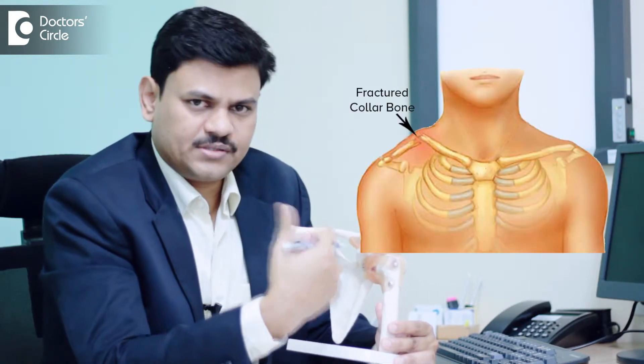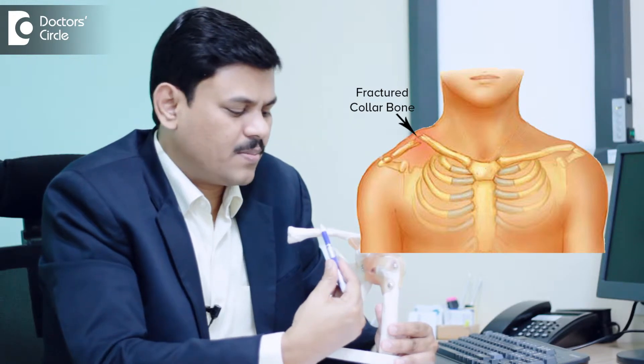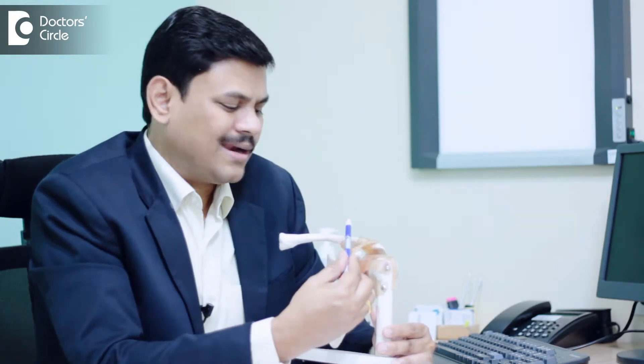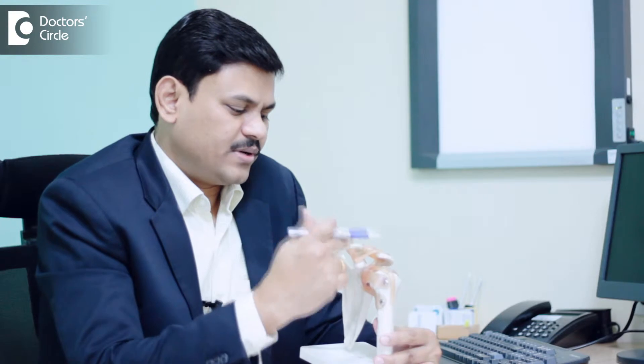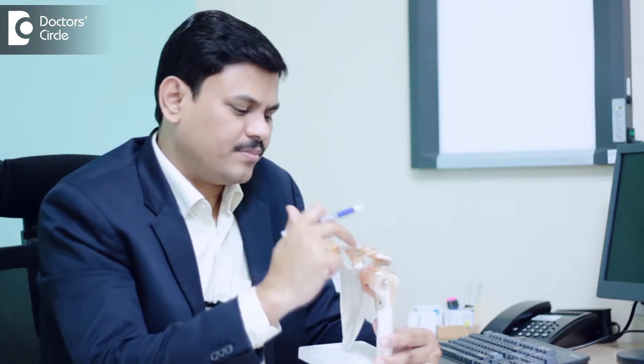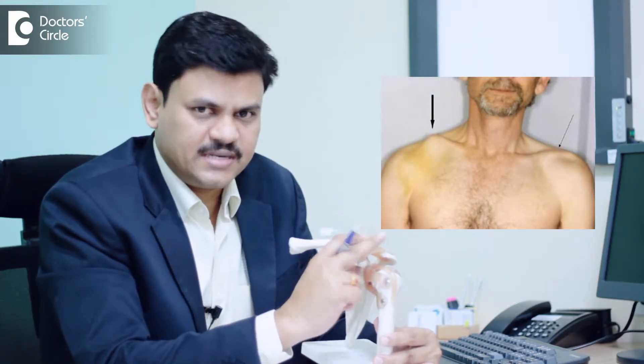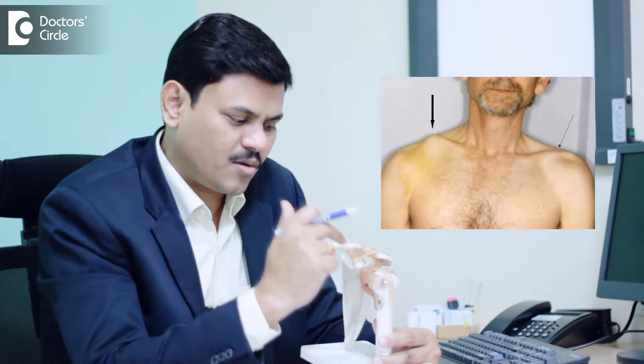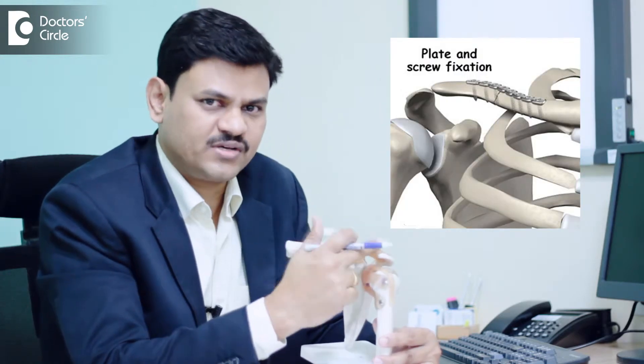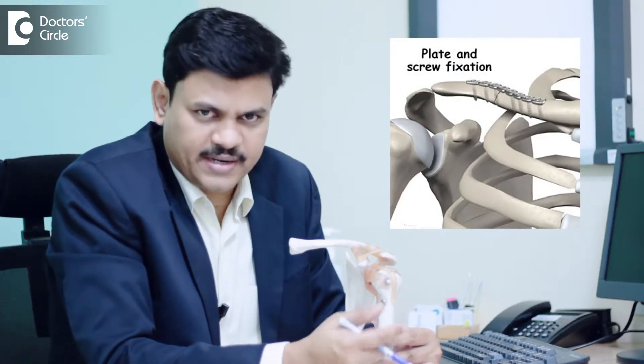The other common injuries around the shoulder joint are the collarbone injuries. The collarbone can be broken in the middle part or it can be broken on the lateral end of the collarbone. The lateral end of the clavicle gives attachment to a muscle called the trapezius muscle which pulls the bone up. Many a times this fracture end tends to pop out beneath the skin. Such patients need surgery where the bone is brought back into its place and fixed with either wire, screws or plates.